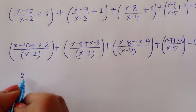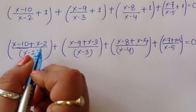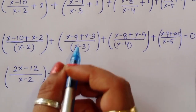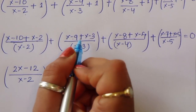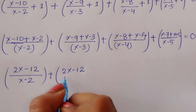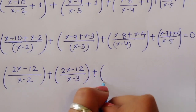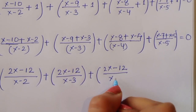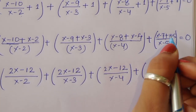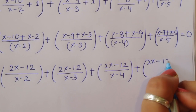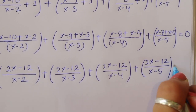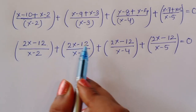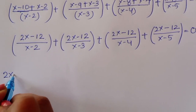Simplifying each numerator: first term gives (2x minus 12)/(x minus 2), second term gives (2x minus 12)/(x minus 3), third term gives (2x minus 12)/(x minus 4), and fourth term gives (2x minus 12)/(x minus 5), all equal to 0. We can see that (2x minus 12) is common in every term.